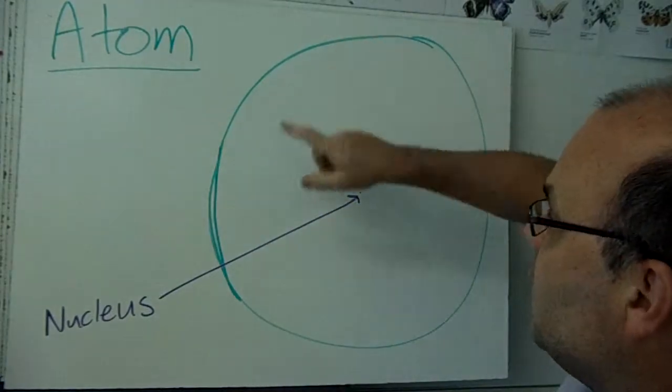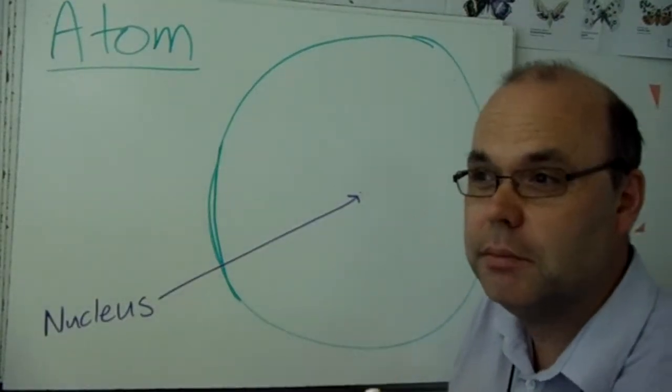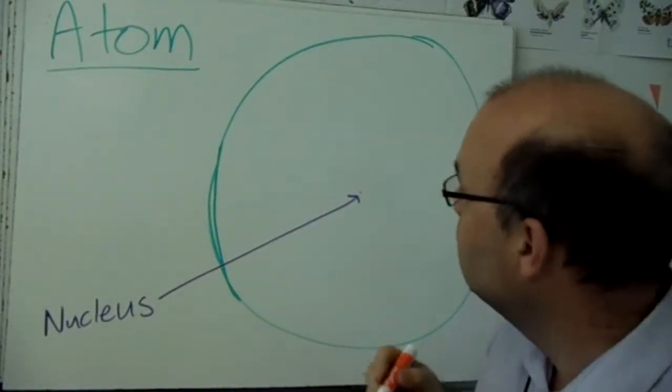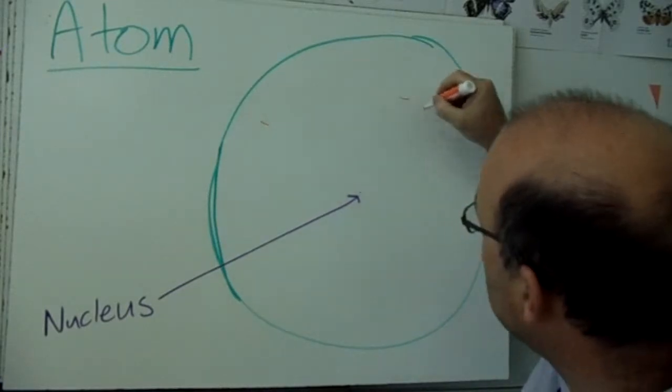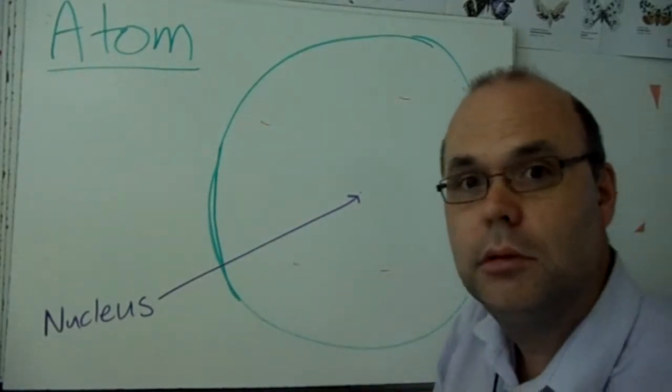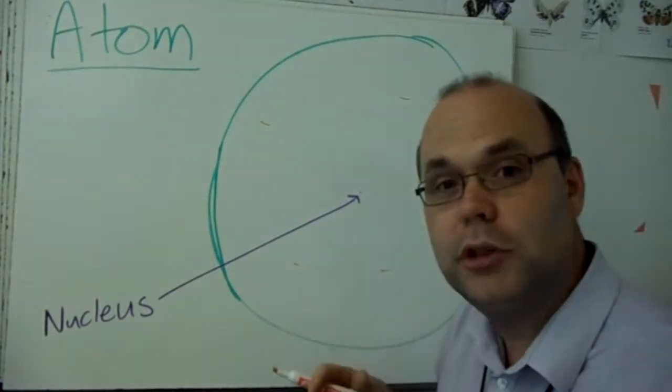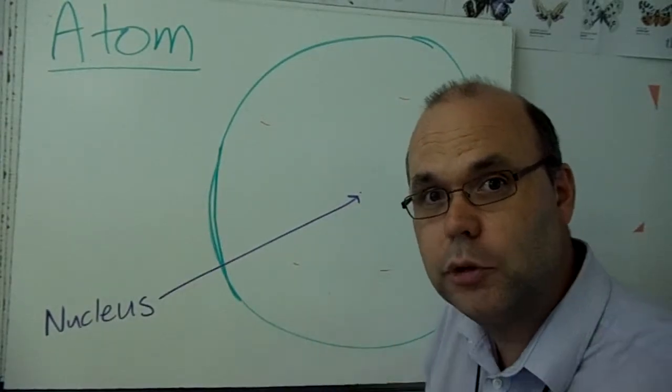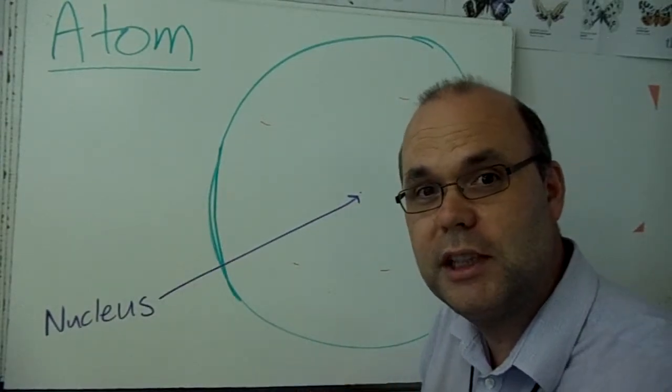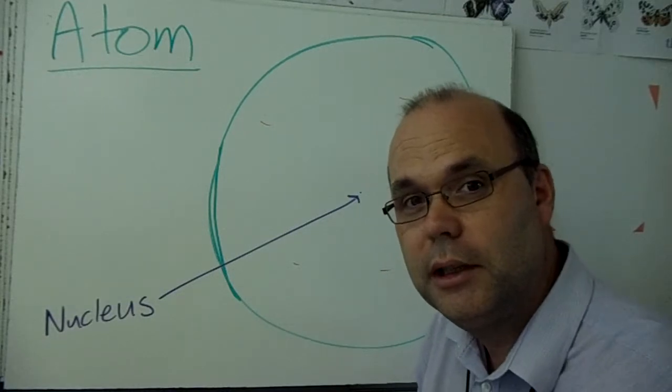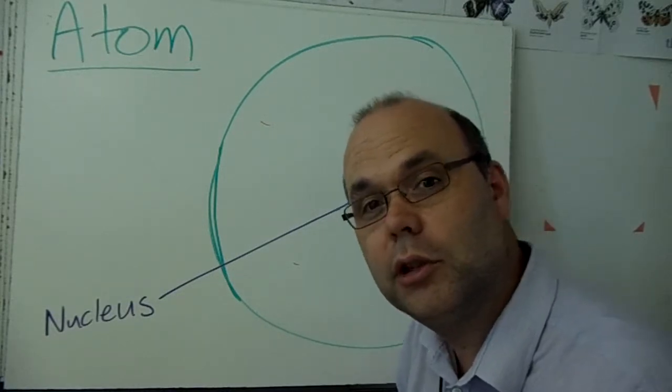Now the rest of the atom, what's that? Well actually there's pretty much nothing there. There are a few little electrons whizzing around. But if our atom was as big as the football stadium, we wouldn't even see the electrons. They'd be so small. They're almost so small that they're not there.